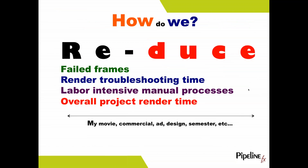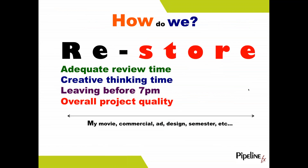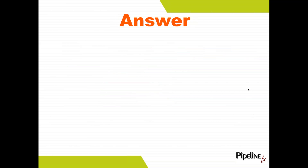How do we reduce the amount of failed frames in our animations, trying to troubleshoot a render, clicking on things manually — and just reduce the amount of time we spend rendering a project? How do we restore adequate time to review the things we're working on, creatively think about it, try to have a life, and keep the overall project quality high? We answered that with something we call smart farming, or intelligent render farm management.